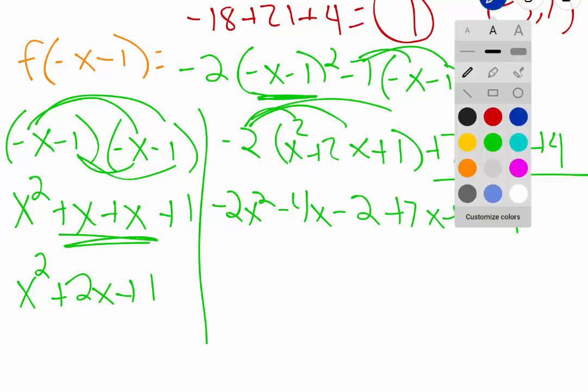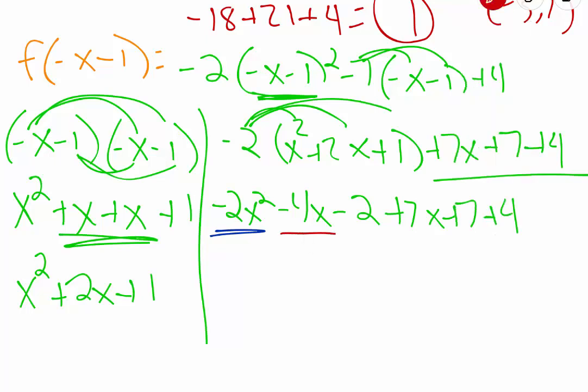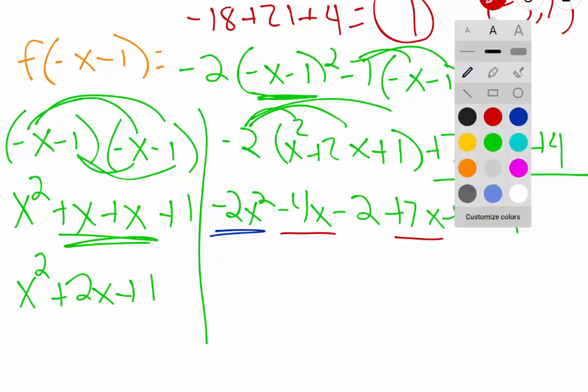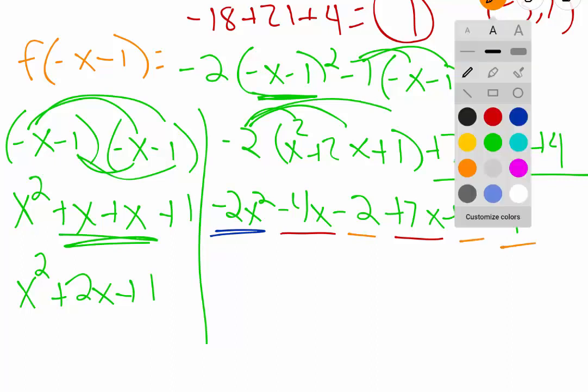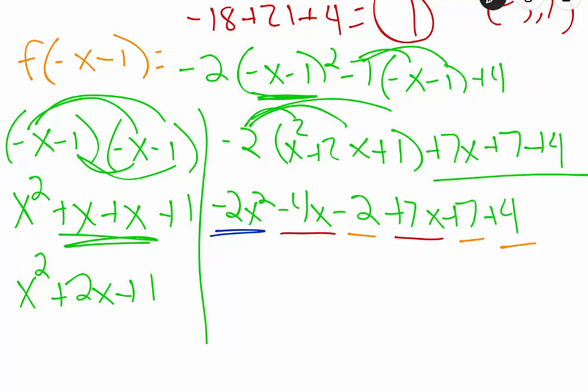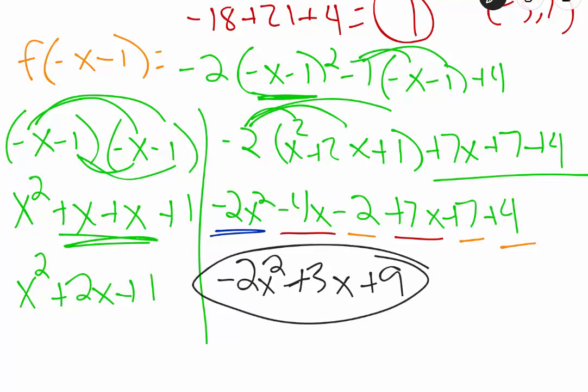Like terms here, well let's see, we only have one of our x squares. We have negative 4x, positive 7x as far as our x terms. And as far as our numbers, we have negative 2, positive 7, positive 4. So when we combine this all here for the end, drop down the negative 2x squared because it has nothing to combine with. Negative 4 plus 7x is 3x. Negative 2 plus 7 is 5, and 5 plus 4 is 9. So f of negative x minus 1 is equal to that right there.